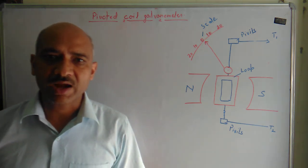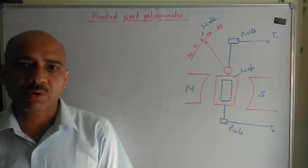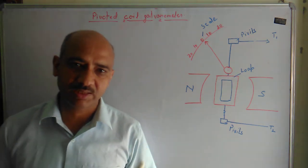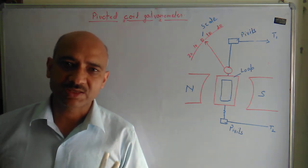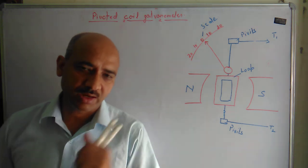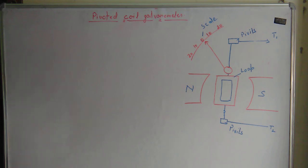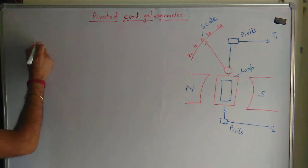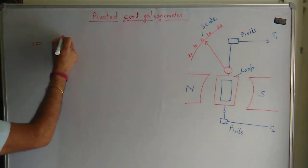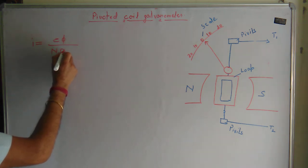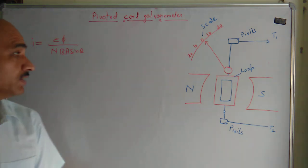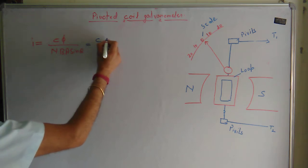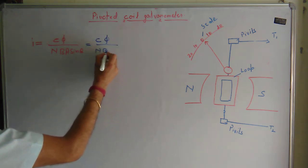We were talking about current sensitivity and voltage sensitivity. Current sensitivity means the galvanometer is sensitive to current, and voltage sensitivity means it is sensitive to voltage. For finding the current sensitivity, we have the expression: i equals c·φ divided by n·B·A·sinθ. When θ equals 90 degrees, we get i equals c·φ upon n·B·A.